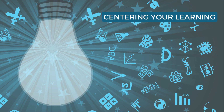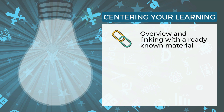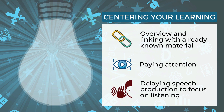The first strategy under this set is overviewing and linking with already known material. This strategy can be accomplished in many different ways, but it is often helpful to follow three steps: learning why the activity is being done, building the needed vocabulary, and making the associations. The second strategy is paying attention — deciding in advance to pay attention in general to a language learning task and to ignore distractors by directed attention, and to pay attention to specific aspects of the language by selective attention. The third is delaying speech production to focus on listening — deciding in advance to delay speech production in the new language, either totally or partially, until listening comprehension skills are better developed.